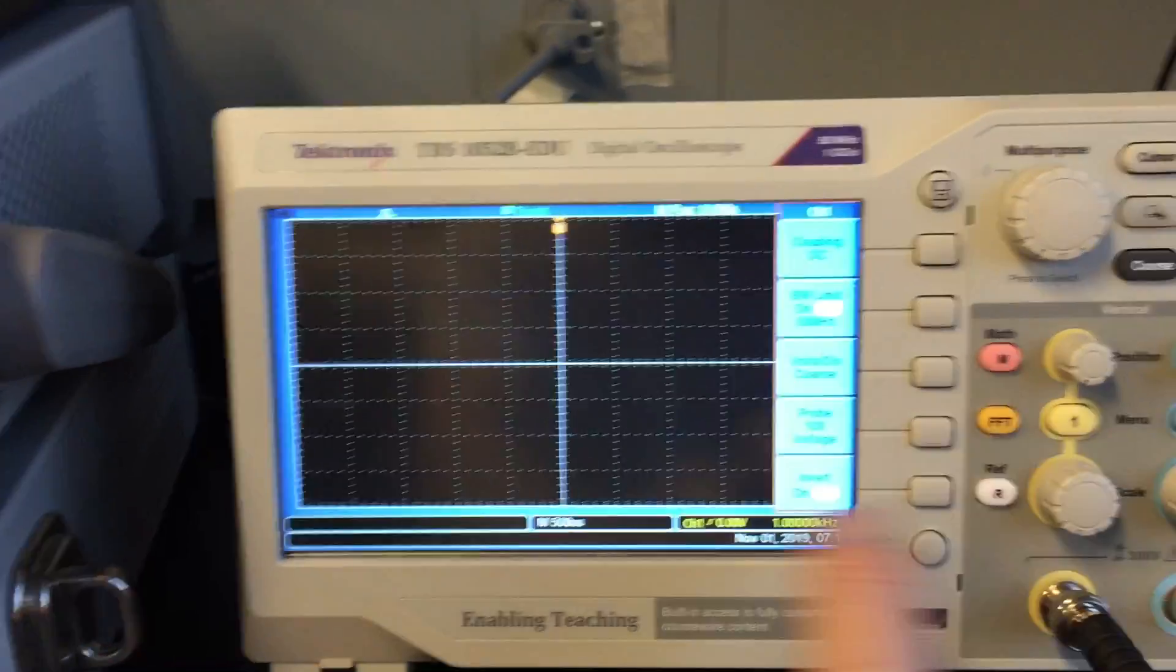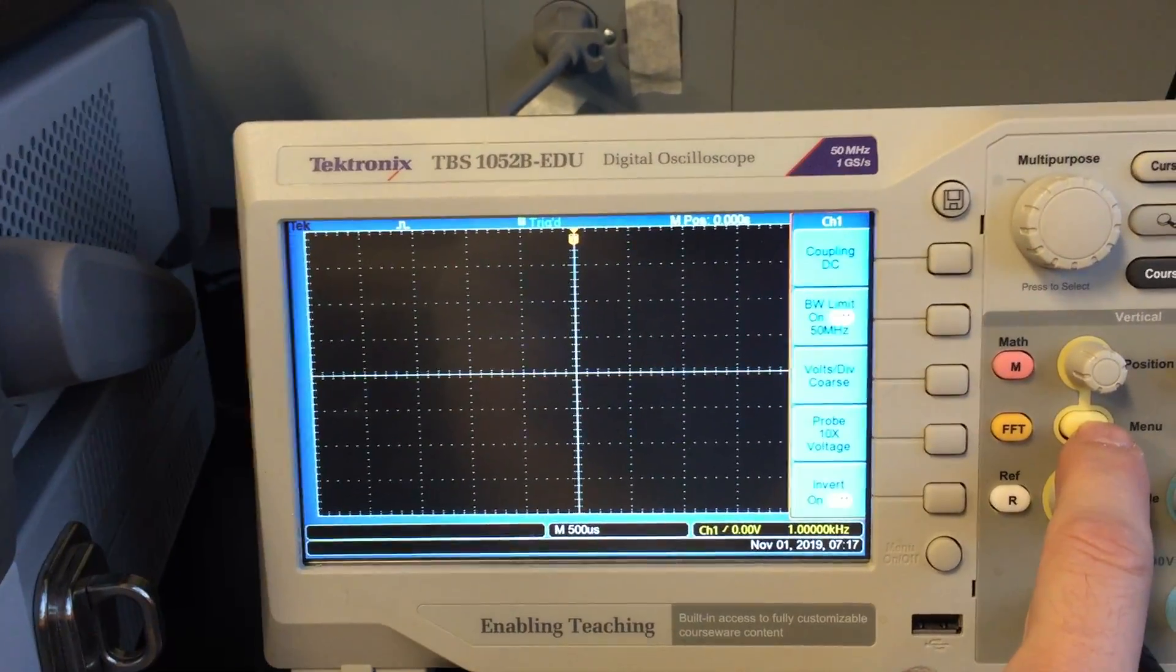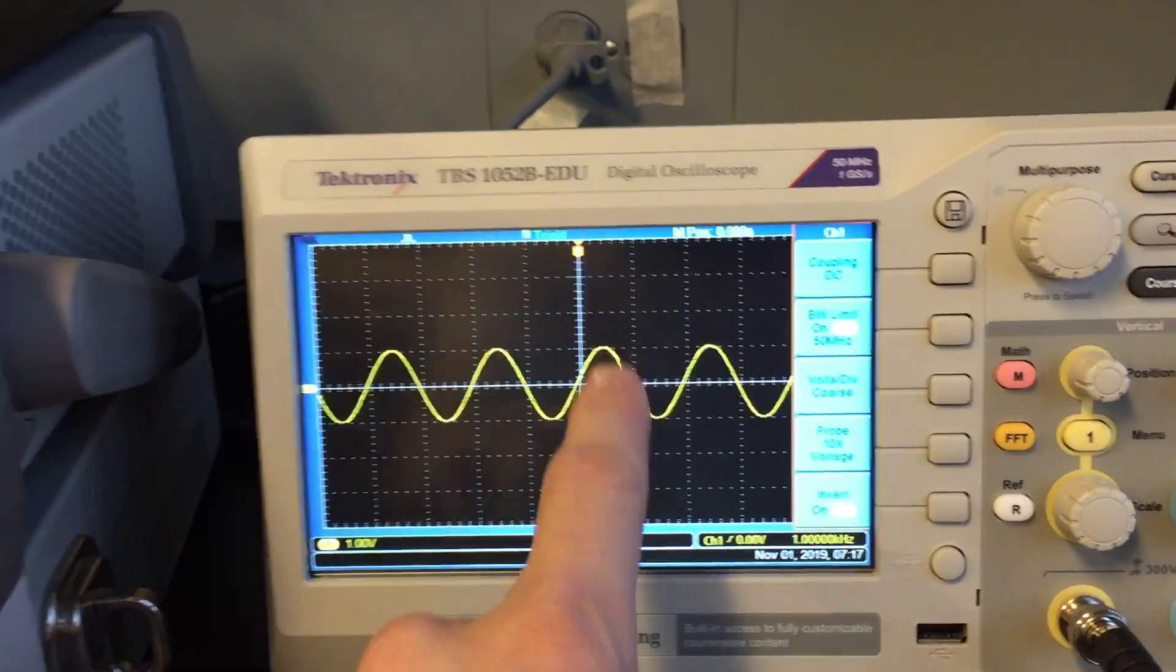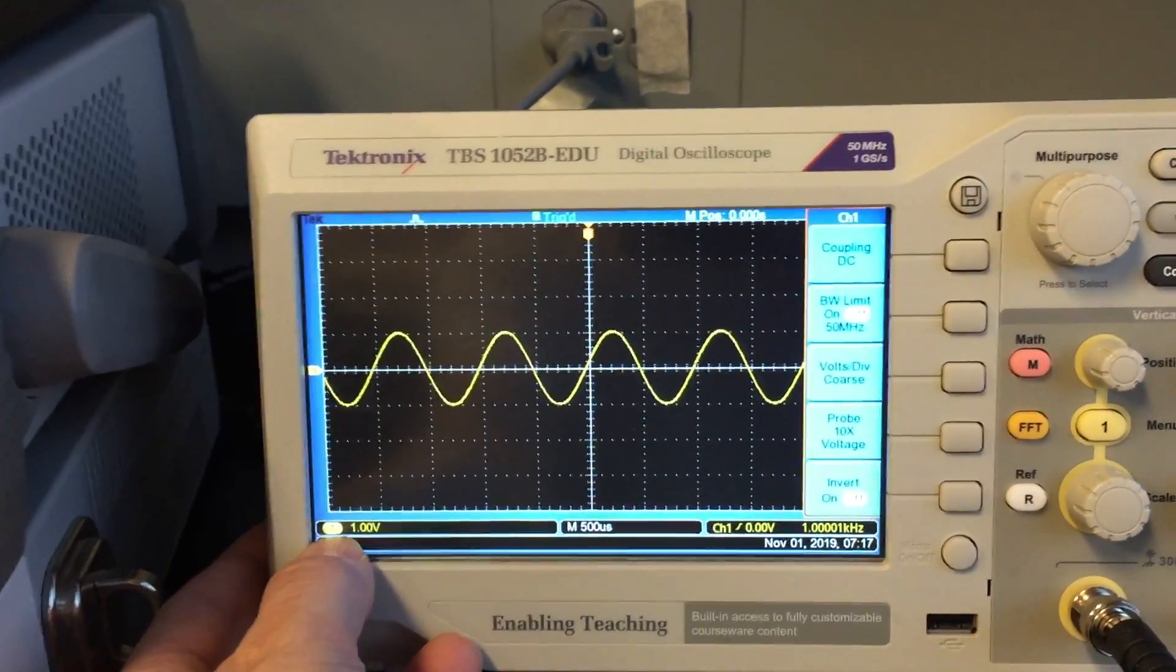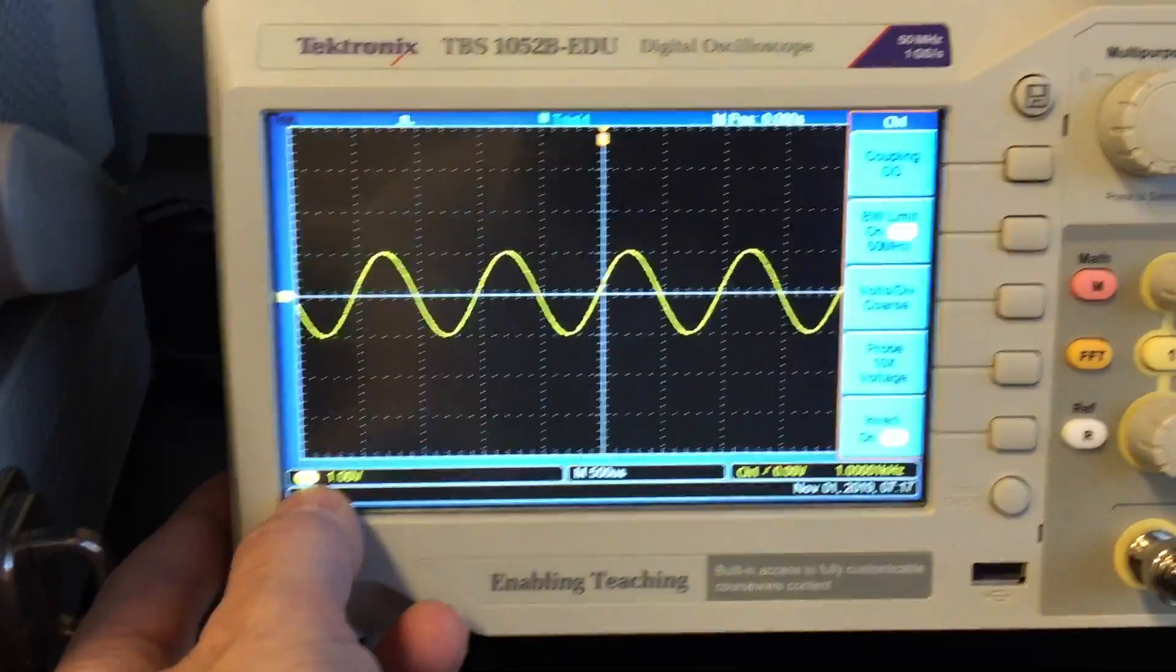So if the trace is gone, there's no indication down here, no volts per division. Push the number one button. Trace will either appear or not appear. But more importantly, it says right here the number one is on. Number one channel is on. It's on one volt per division.